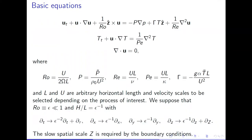What are the basic equations? Here are the primitive equations — this is just the Navier-Stokes equation. This is the Coriolis term, written in terms of the Rossby number. I non-dimensionalize the velocity in terms of some characteristic velocity scale U and a characteristic length scale L, which introduces the quantity 1 over R. I'm interested in low Rossby number, so this is going to be a large term.